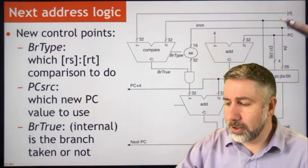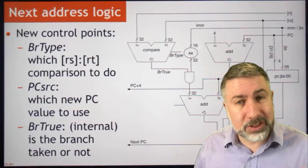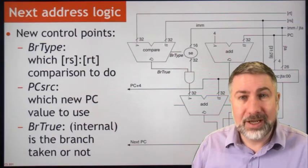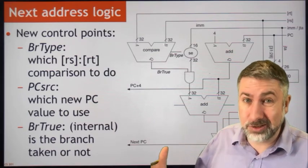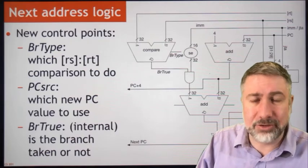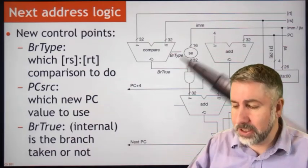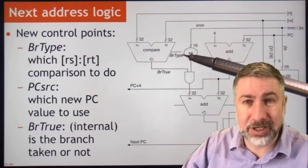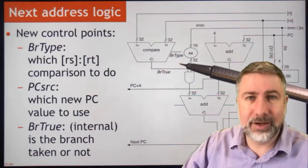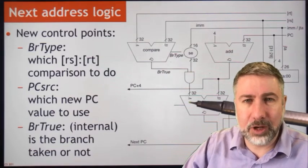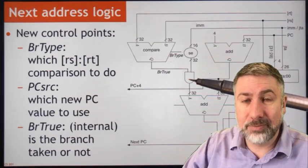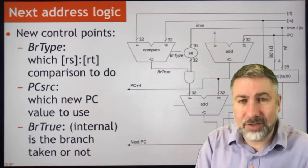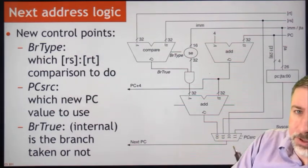When we do a branch, we bring RS and RT in here and compare them. There are a few ways to compare: we can subtract and check flags, or compare for equality. Most of the time we're comparing for equality, and we use SLT for less-than or greater-than comparisons, then branch on equal or not equal. Based on what kind of comparison we're doing — a control point — whether or not the branch is successful feeds the AND gate, which blocks or passes the sign-extended shifted branch offset. The result — either PC plus 4 or PC plus 4 plus the branch offset — goes to the 00 input of the multiplexer as the next instruction.